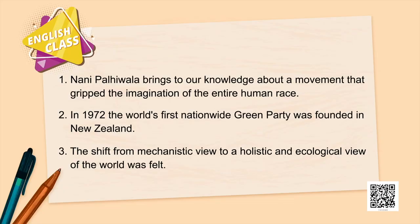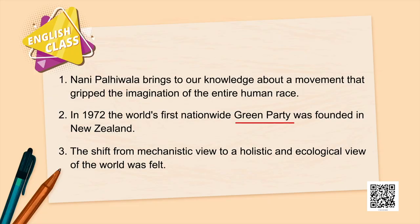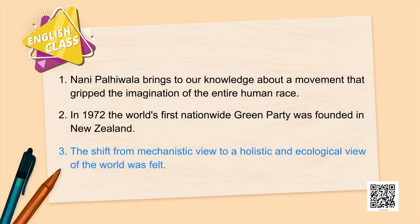This movement gripped the imagination of the entire world — not many things do that. In New Zealand in 1972 the Green Movement Party was founded, a political party, meaning there was a global concern to protect the environment. The shift from a mechanistic view to a holistic and ecological view is as revolutionary as the shift introduced by Copernicus, who proved that Earth and other planets revolve around the sun.